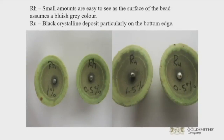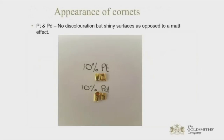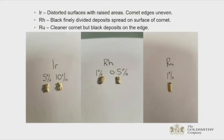Rhodium on the left: small amounts are easy to see — the bead assumes a bluish-grey colour. Ruthenium shows black crystalline deposits, particularly on the bottom edge. For cornets after parting: platinum and palladium show no discolouration but very shiny surfaces, as opposed to a dull or matte effect. This happens with iridium, rhodium, and ruthenium.